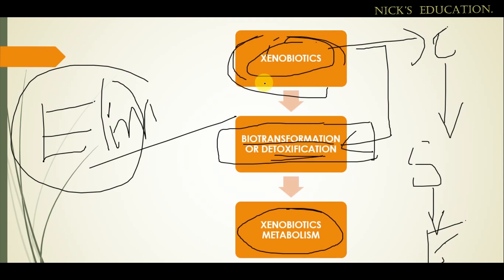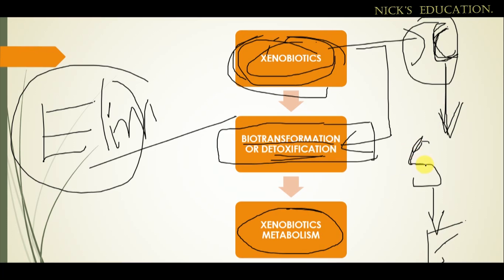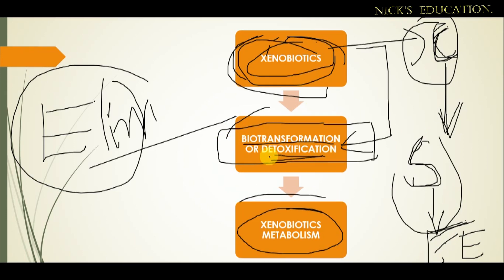In order to eliminate xenobiotics from the body, biotransformation or detoxification must occur. Xenobiotics have a chemically complex structure which must be converted into simple chemical structures so they can be easily eliminated. This conversion process is called xenobiotic metabolism, or biotransformation — where toxic xenobiotics are converted into non-toxic forms and finally eliminated.